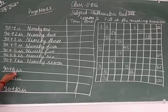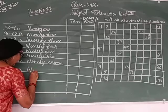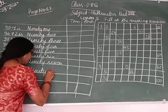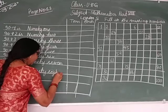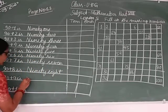90 plus 8 is 98. It's calling it ninety-eight, N-I-N-E-T-Y E-I-G-H-T. 90 plus 9 is 99.